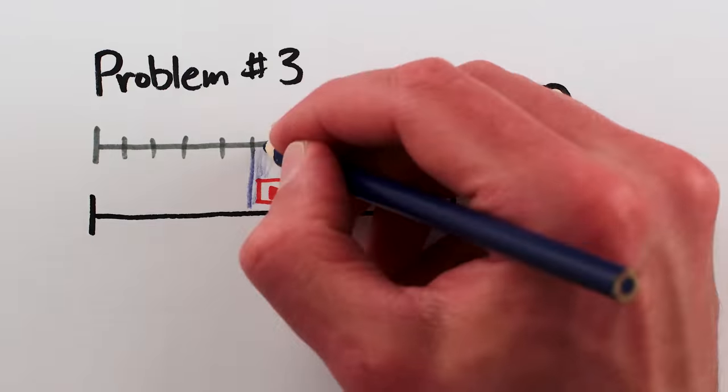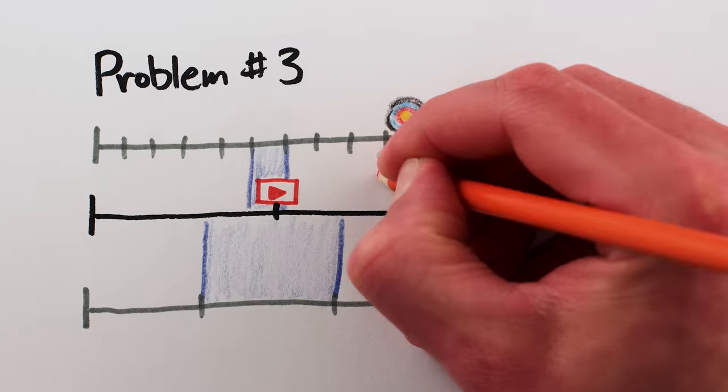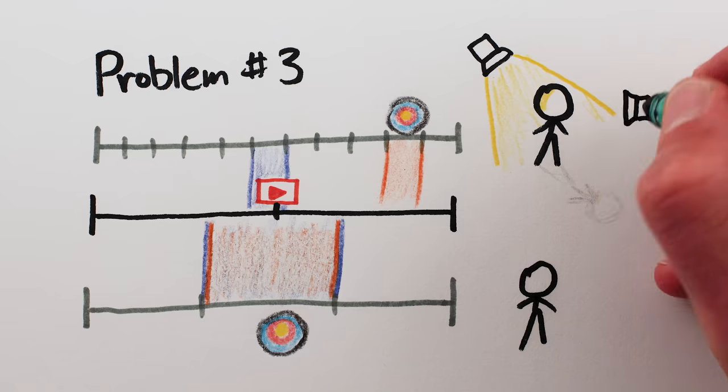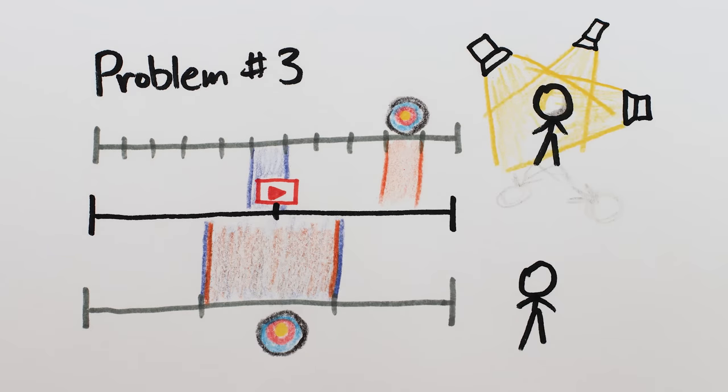And last, sometimes you have both differing discernment capacities and differing targets. Maybe one person is more discerning about the lighting of a scene, and they also care more about making sure the lighting is perfect.